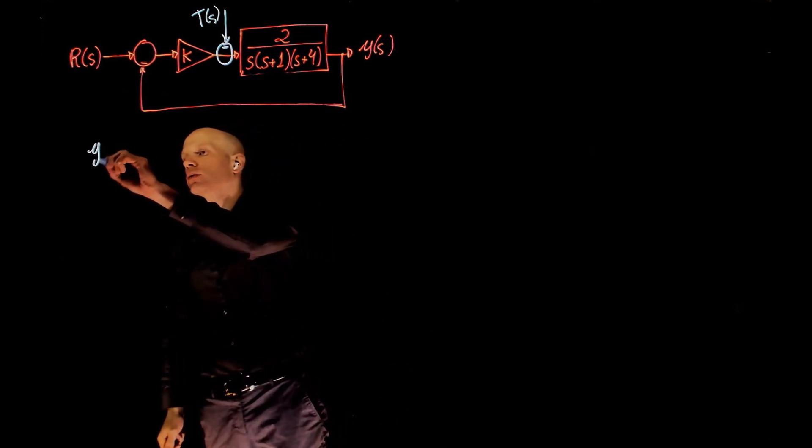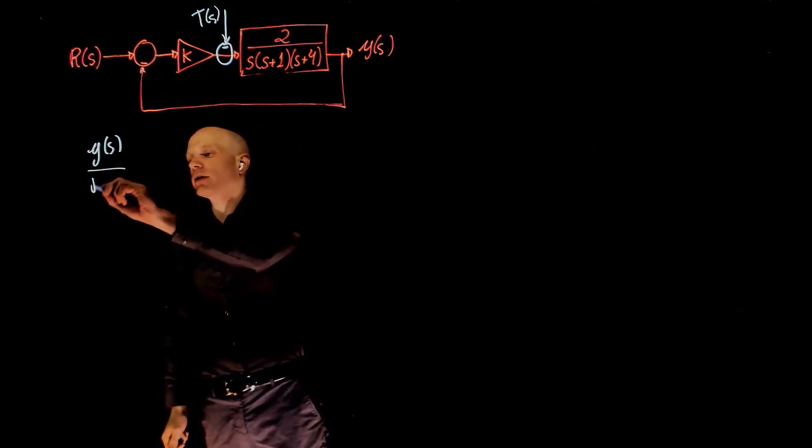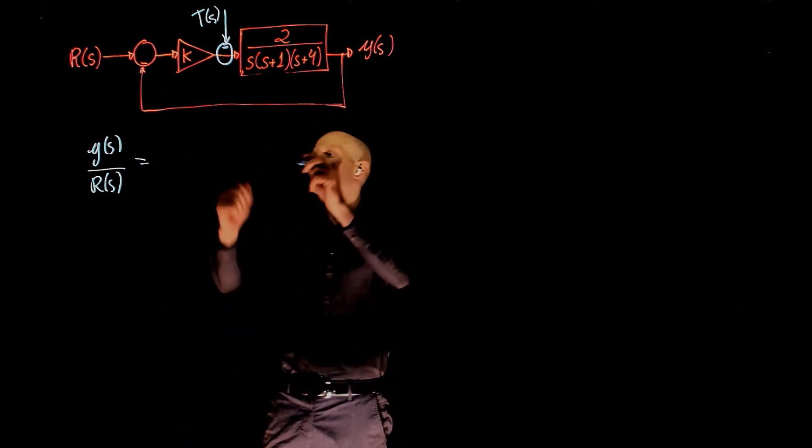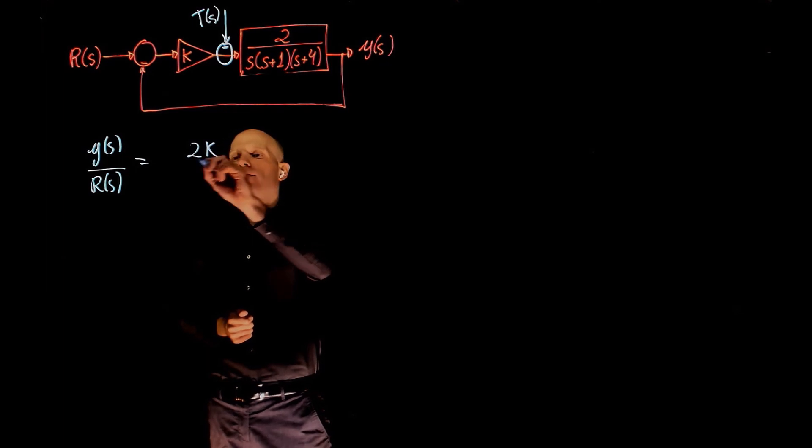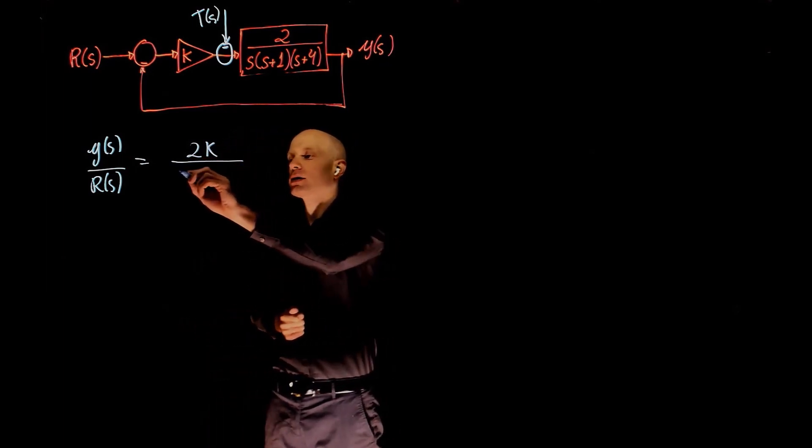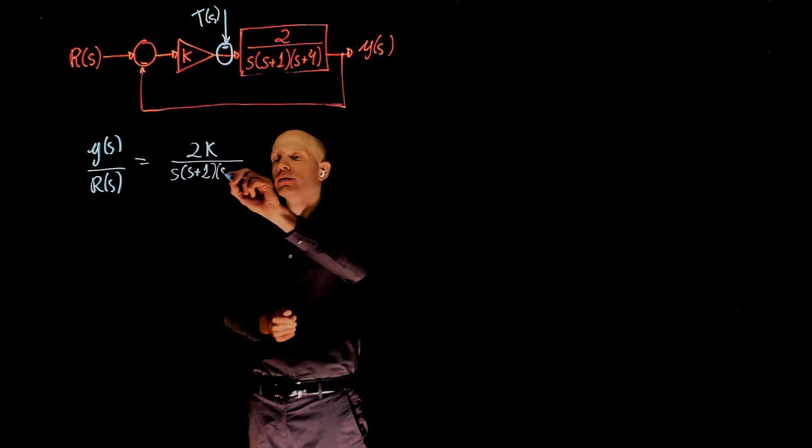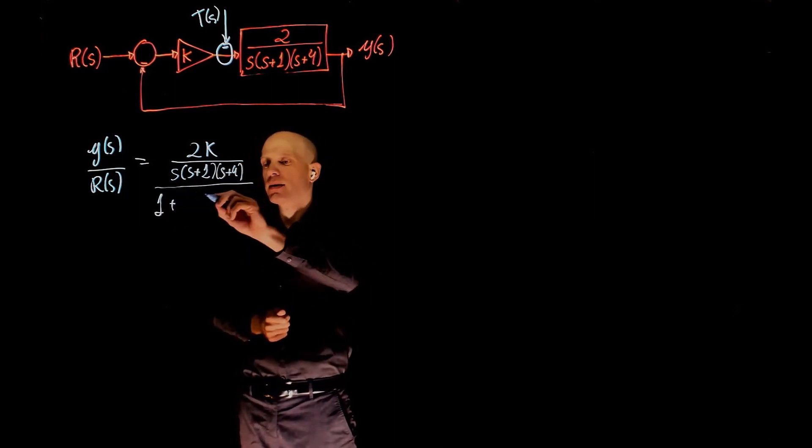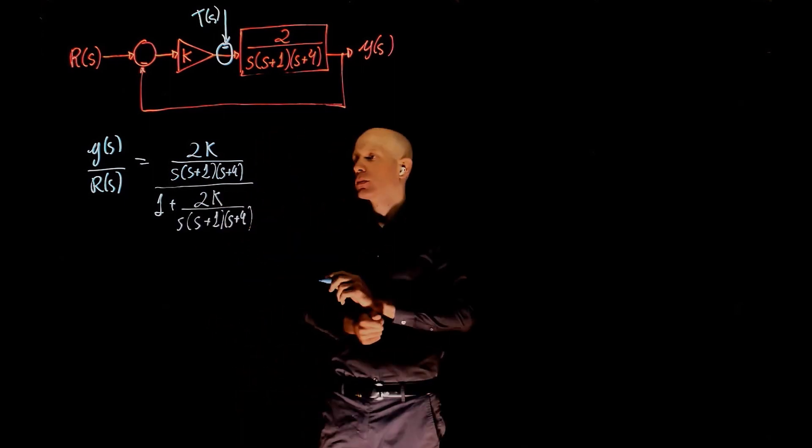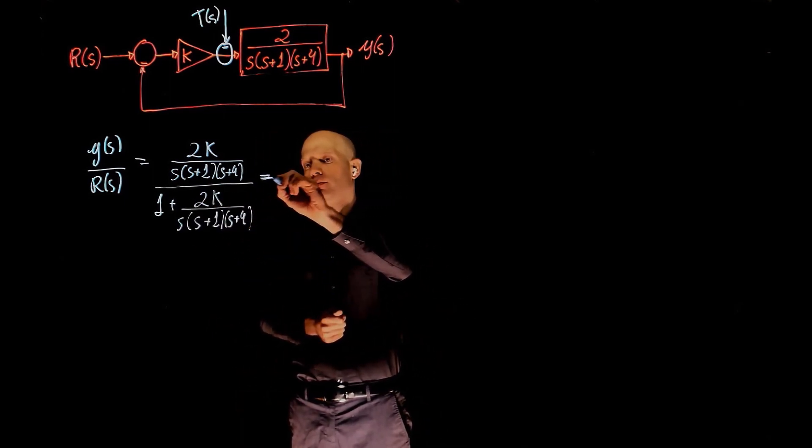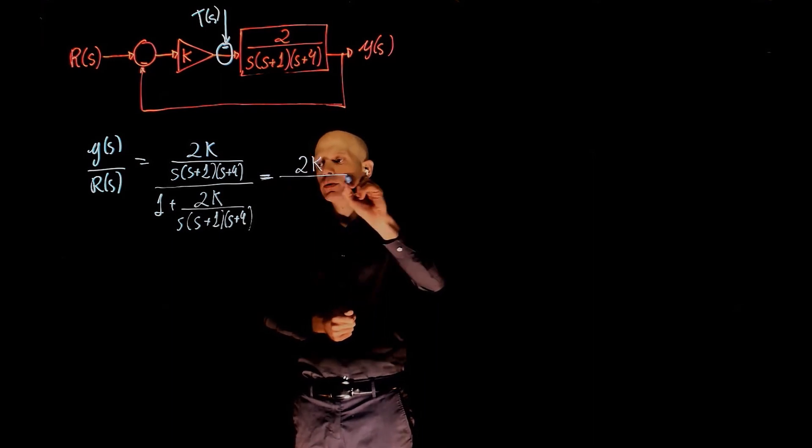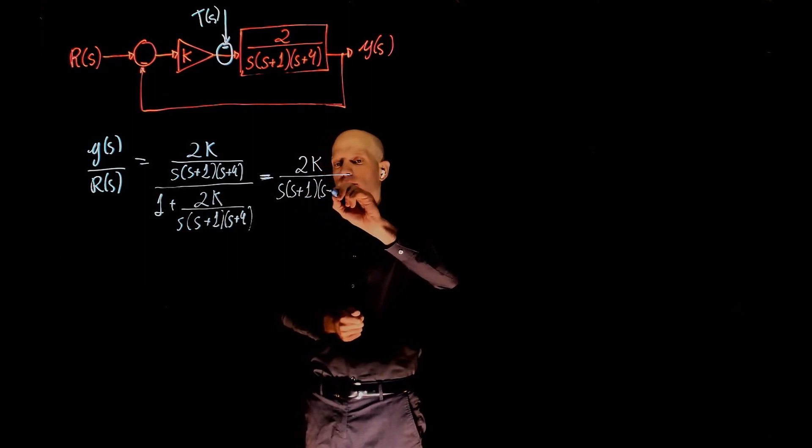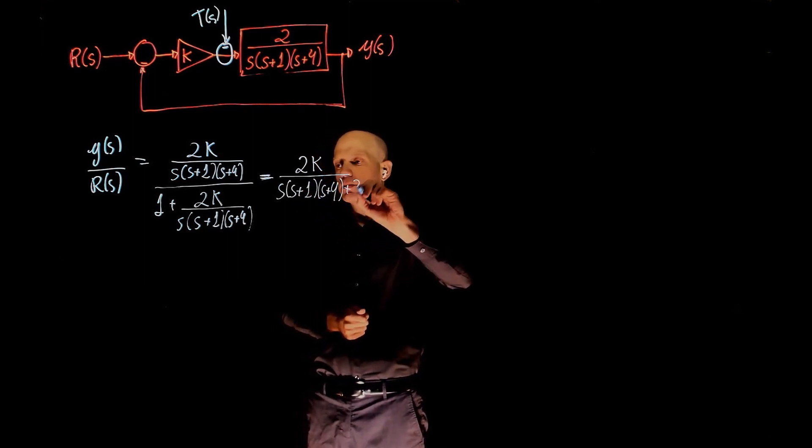The transfer function Y divided by R is as simple as the multiplication of these two functions and the feedback loop. So we have 2K over S(S+1)(S+4) divided by 1 plus the same function. And this simplifies to 2K over S(S+1)(S+4) + 2K.